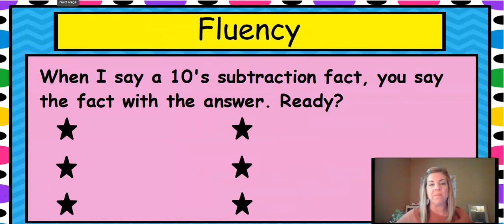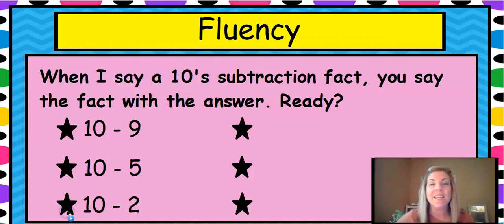So we're going to deal with all of these in today's lesson. But first, we're going to do some fluency. So I'm going to say a 10 subtraction sentence, a fact, and then you're going to say it with the answer. So for instance, if I say 10 minus 9, you're going to say 10 minus 9 equals 1. So 10 minus 5, and you say 10 minus 5 equals 5. 10 minus 2, you say 10 minus 2 equals 8. Good job.